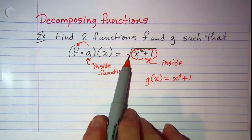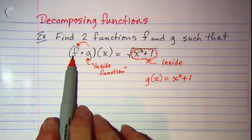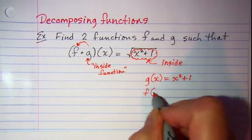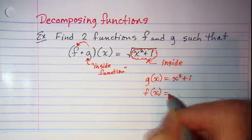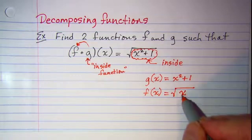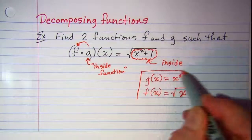My radical is my outside part and f is my outside function, so my f of x then needs to be the square root of x. Let's box this in and kind of check it.